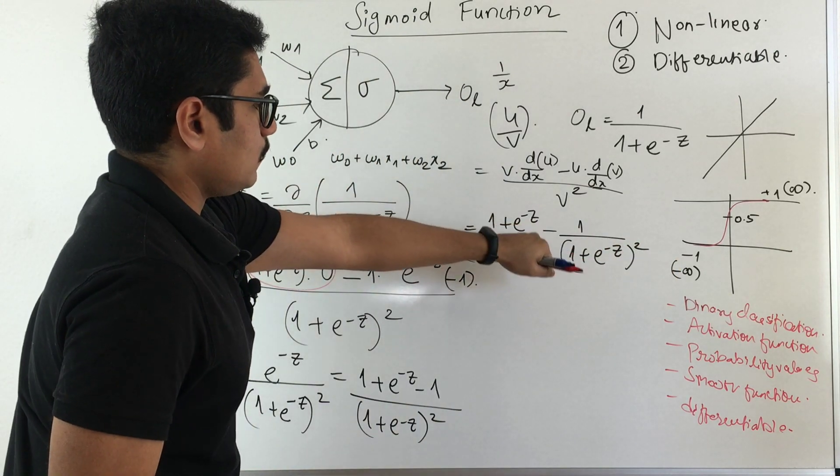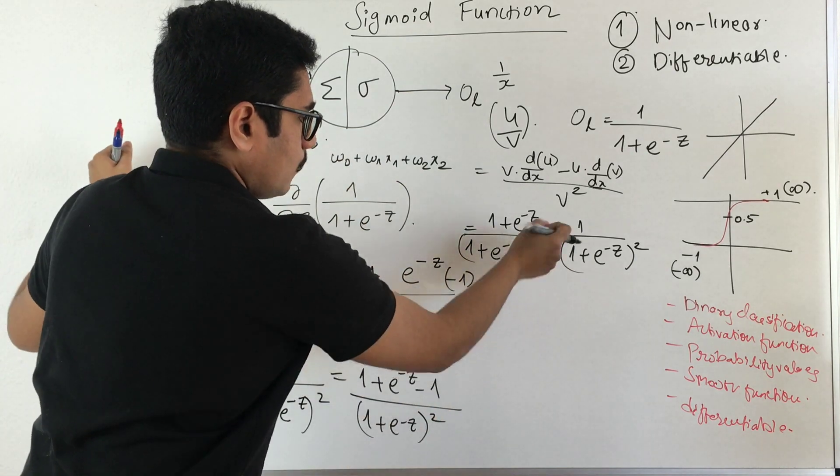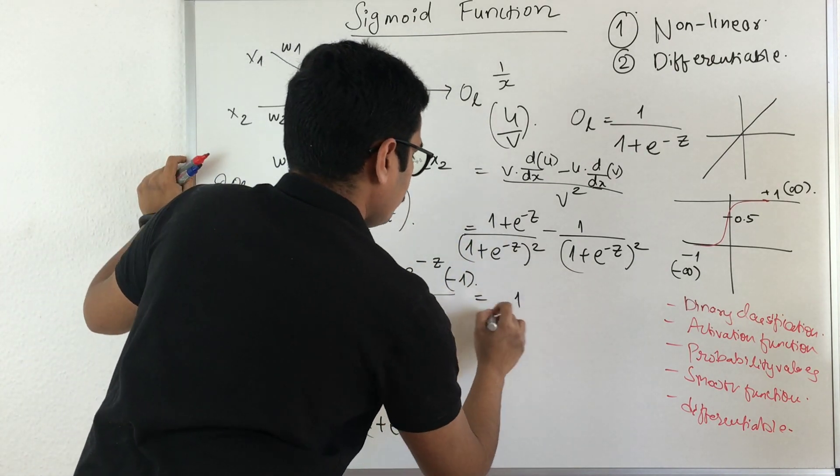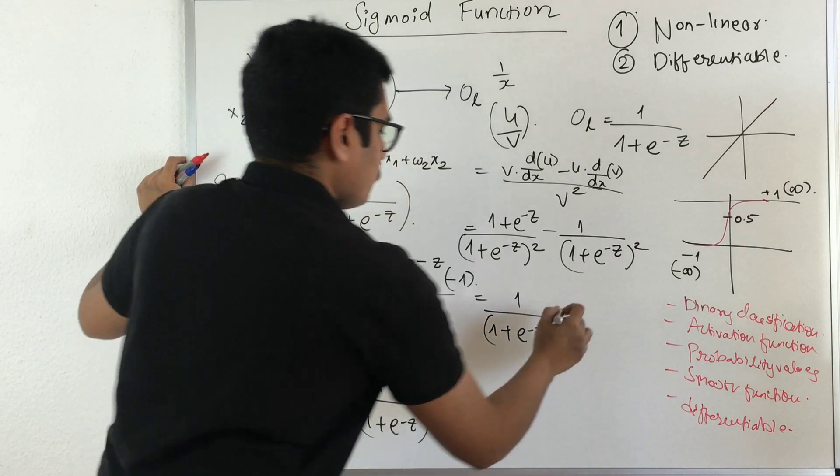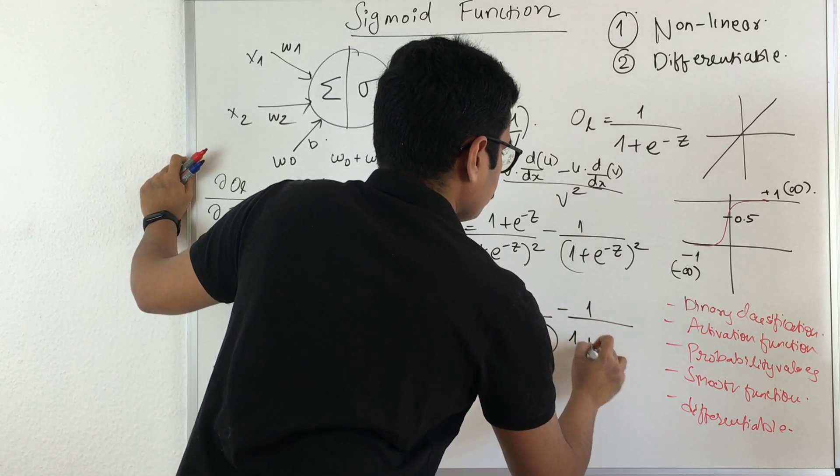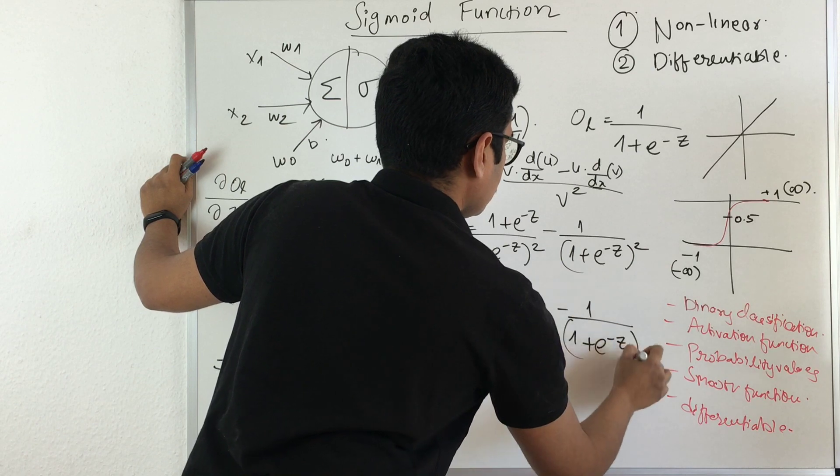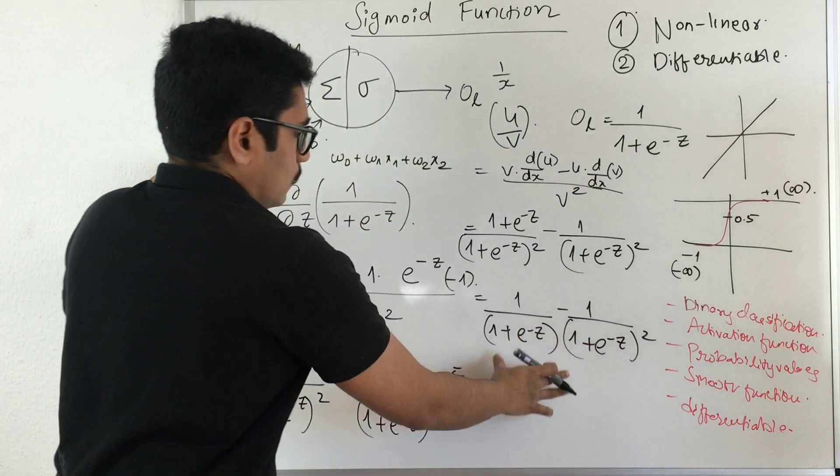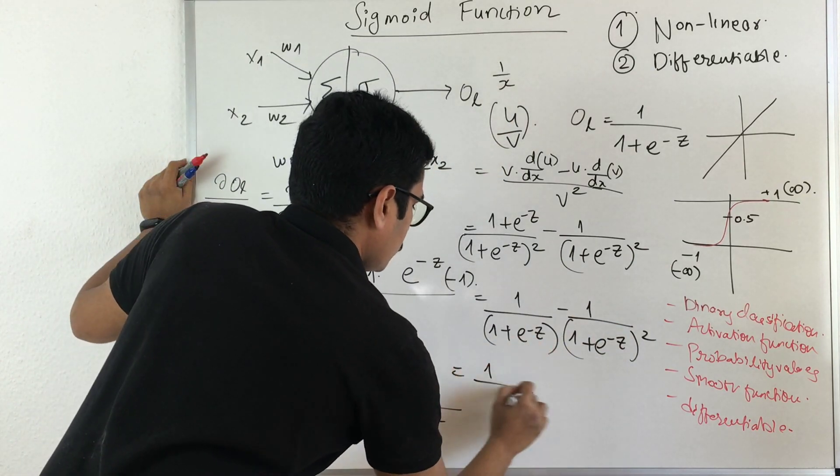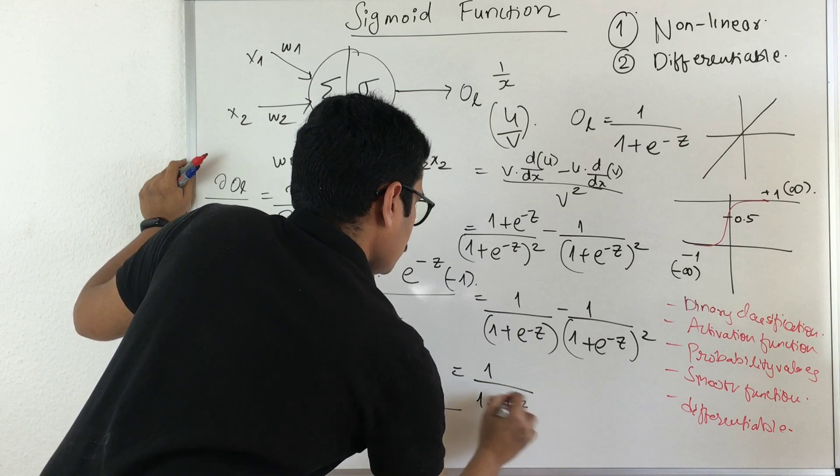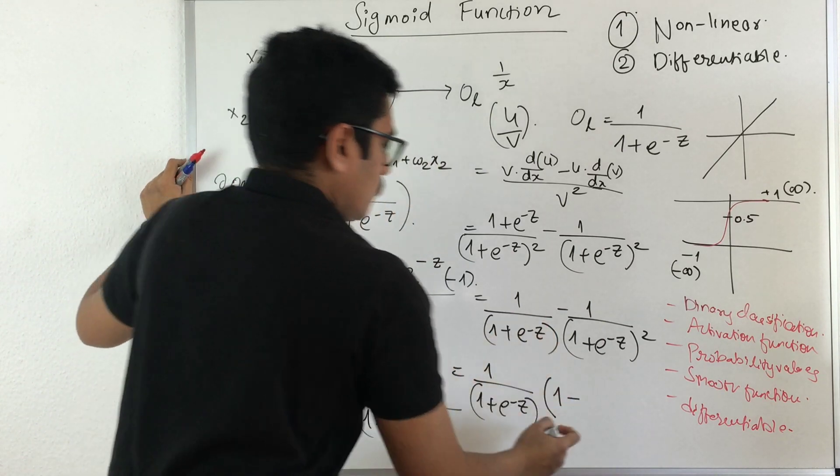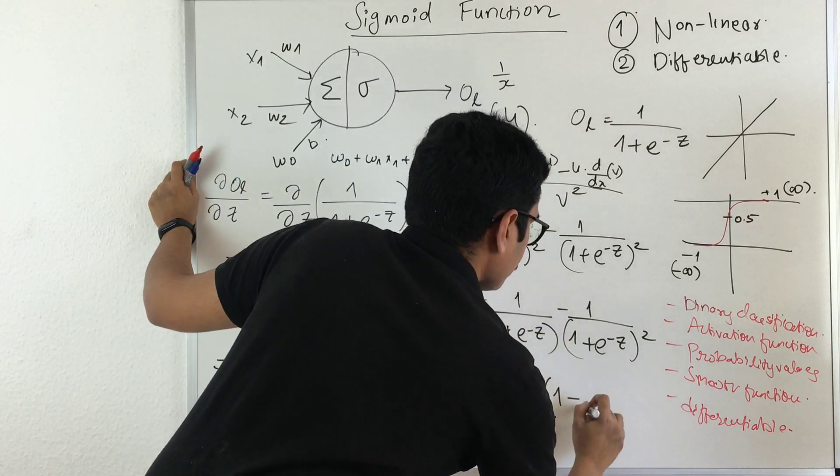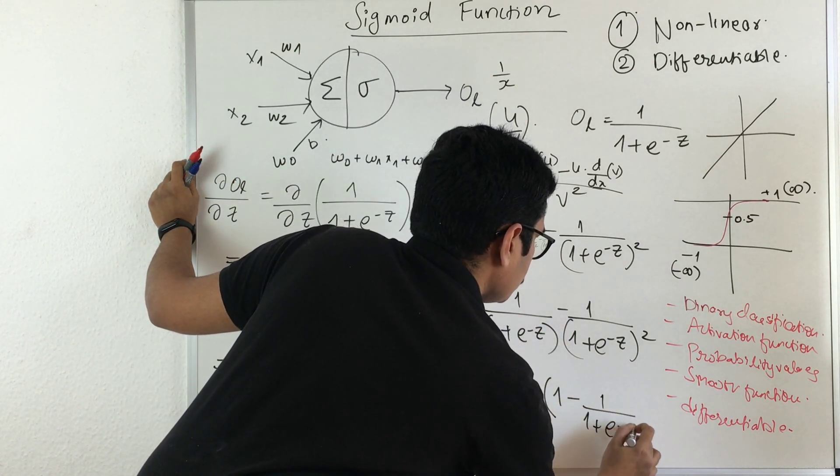If you see, one power from the denominator gets cancelled, so that becomes 1/(1 + e^(-z)), and this is as it is e^(-z) square. Now just take one particular term common. In the bracket what will be left is 1 - 1/(1 + e^(-z)).